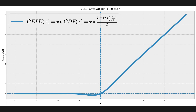This is the GELU activation function. This is how it looks, and this is its equation as a legend. GELU(x) is x times CDF(x), which is the same as x times (1 plus ERF(x / sqrt(2))) / 2. We're going to talk about this equation in a bit.